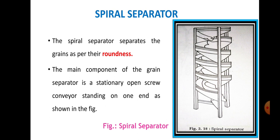The main component of the spiral separator is a stationary open screw conveyor standing on one end, as shown in the figure. The screw conveyor is mounted in a vertical position on a vertical axis, and this screw conveyor has two helixes — one is the inner helix and the other is the outer helix.